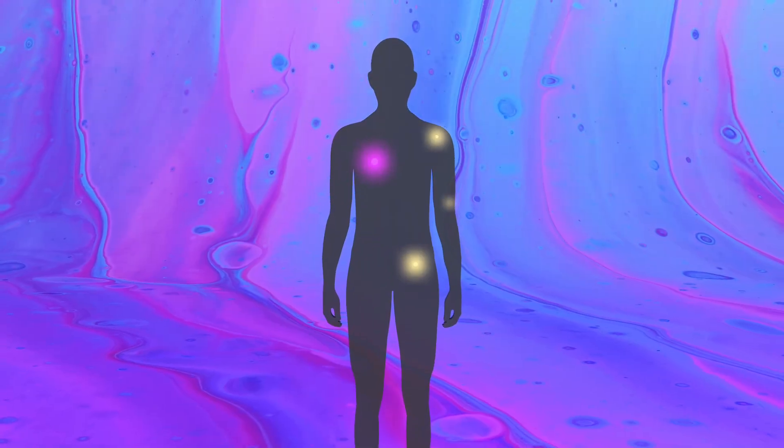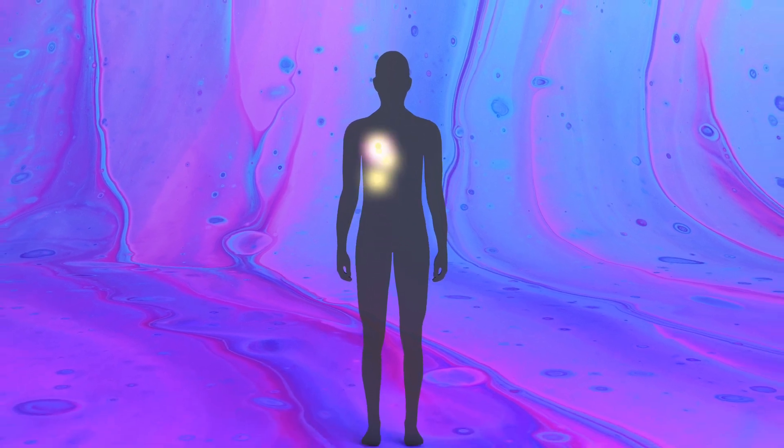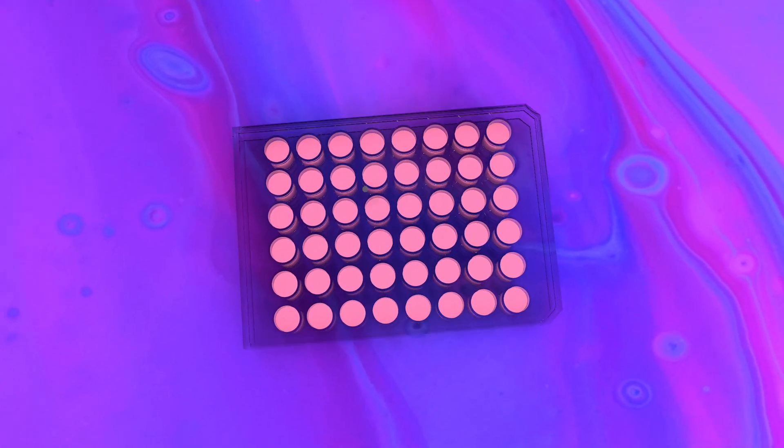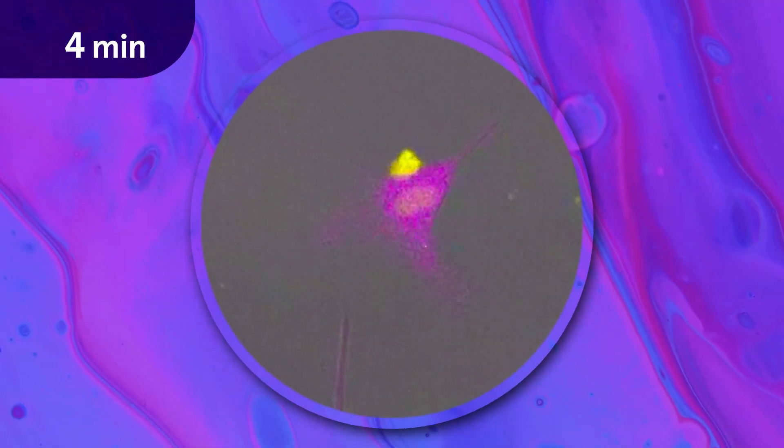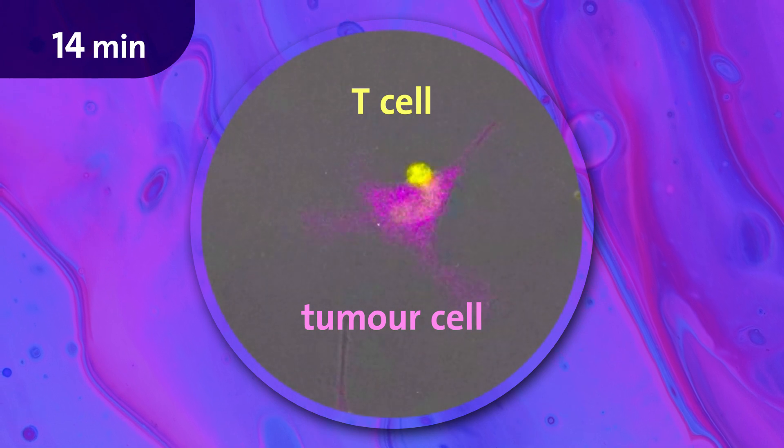Once T cells identify a tumor cell, they attach themselves to kill it off. This process can be more precisely observed in cell culture. The video shows how a T cell eliminates a tumor cell.